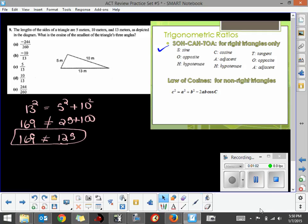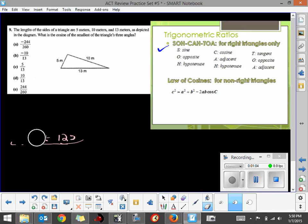Because we have a non-right triangle and we're trying to find a missing angle, the missing angle that we need is this angle here, the smallest angle.